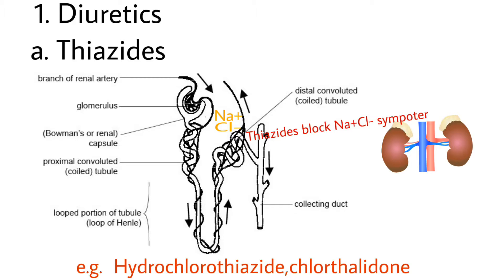Type A is Thiazides. The functional unit of the kidney is the Nephron. Thiazides act on the distal tube of the Nephron. The distal tube reabsorbs sodium and chloride ions through the sodium chloride symporter and sends them to the bloodstream. Because of this, sodium ions increase blood pressure.